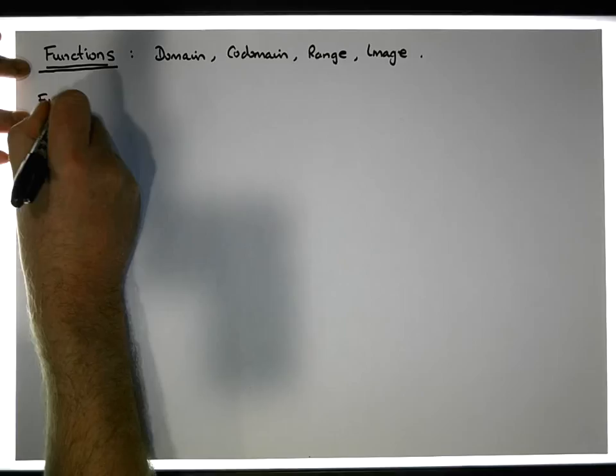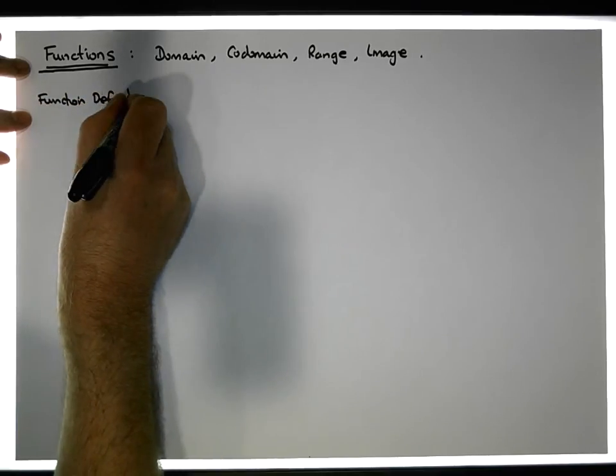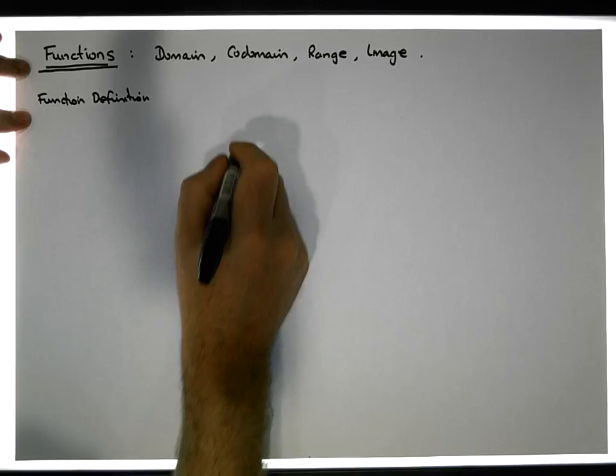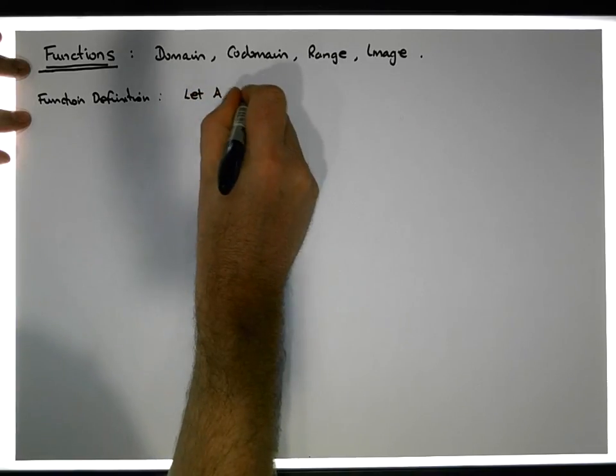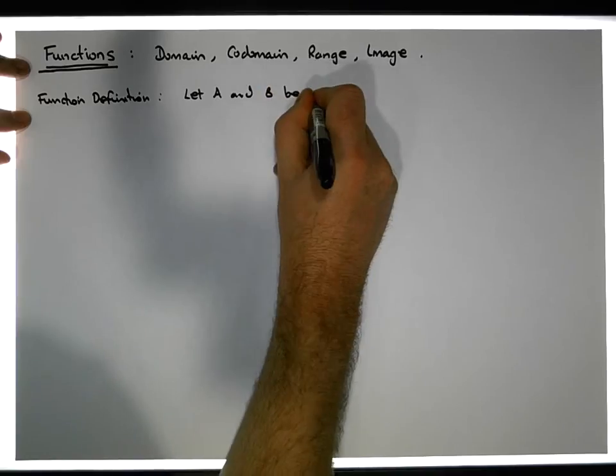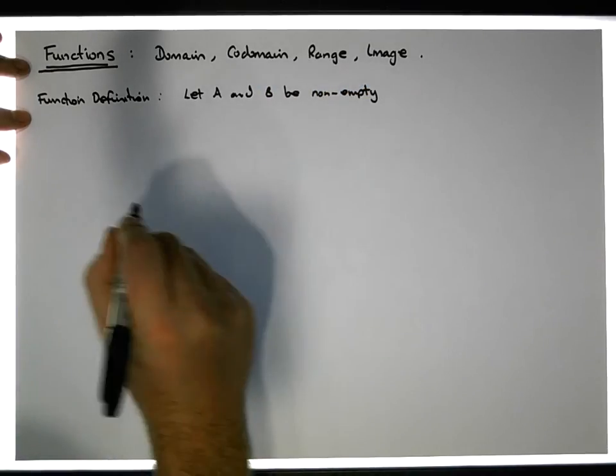The function definition basically says that, first of all, let A and B be non-empty sets. So we have two sets and they're non-empty.